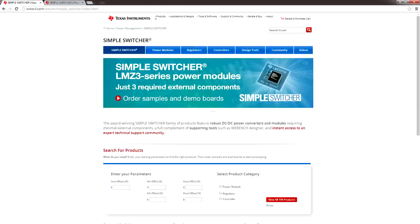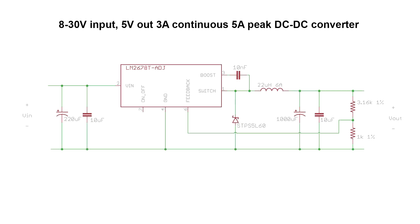Texas Instruments has a portfolio of products called Simple Switchers. All the Simple Switcher products are practically idiot proof and all you have to do is add a diode, an inductor, and some capacitors. They take care of the complicated control electronics inside the chip. Let's use the adjustable version of the LM2678 and here's the circuit diagram.